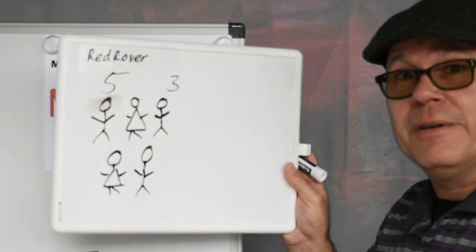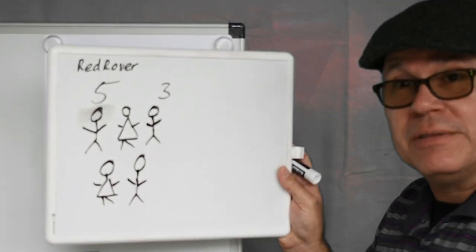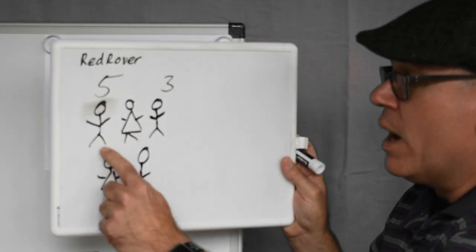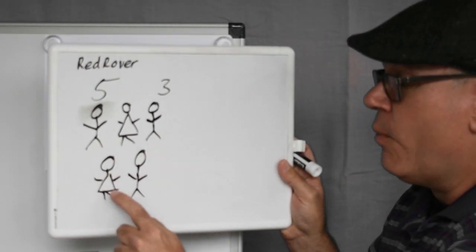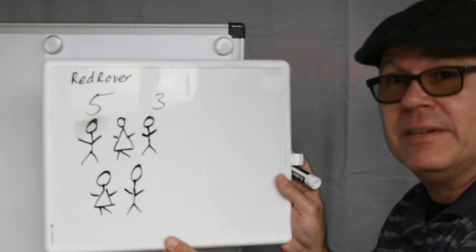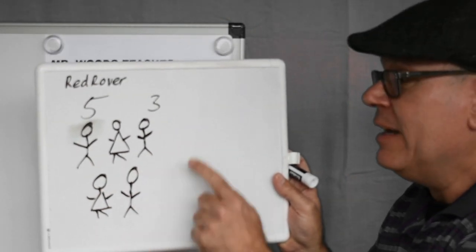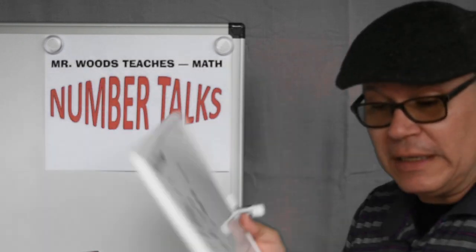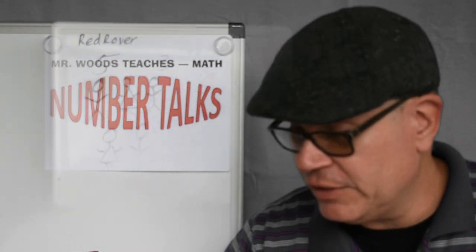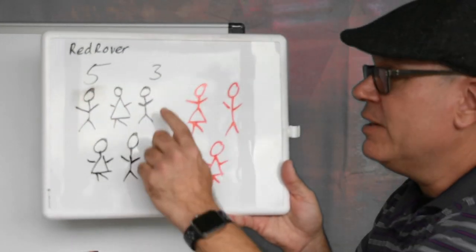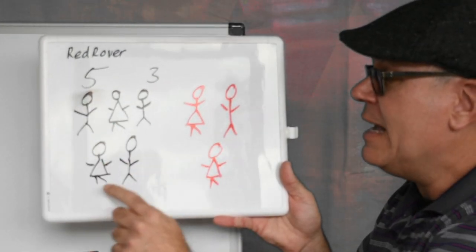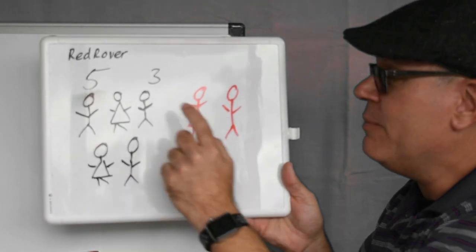So I drew five kids: one, two, three, four, five. And then three more joined. Let's put those in too. See, I have five and I have three more.